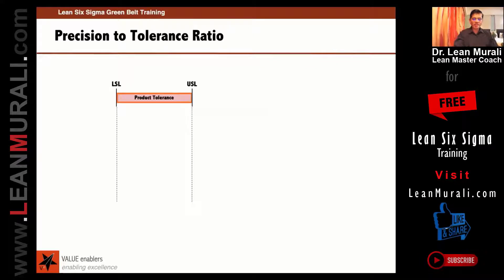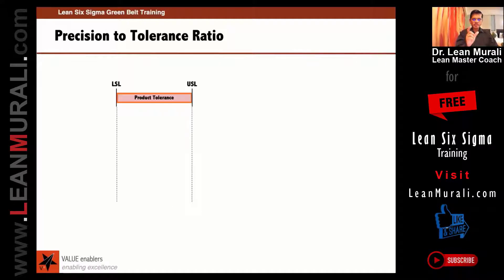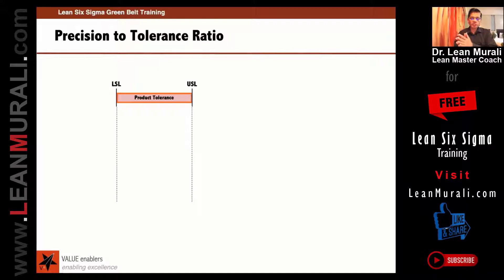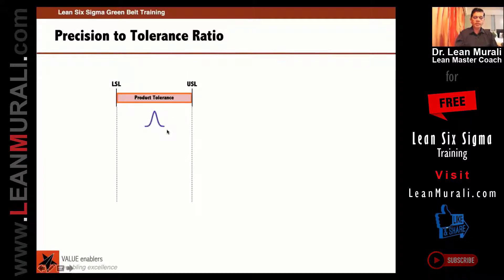Let's look at this more graphically. What is the LSL and USL? Lower specification limit, upper specification limit. If the cookie should weigh between 10 grams and 11 grams, the lower specification limit is 10 grams and the upper specification limit is 11 grams. This is the product tolerance. Our product is a cookie.